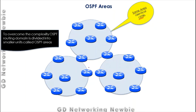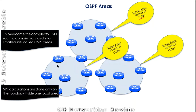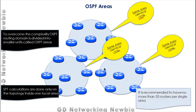The LSDB from one area does not need to be identical to that of another area — each area only processes its own LSDB. Areas will have some limited information about other areas but not the complete LSDB, to reduce the burden. SPF calculations are done only on the topology inside the local area, so processing time and memory requirements are reduced. As per study, it is recommended to have no more than 50 routers per single OSPF area.